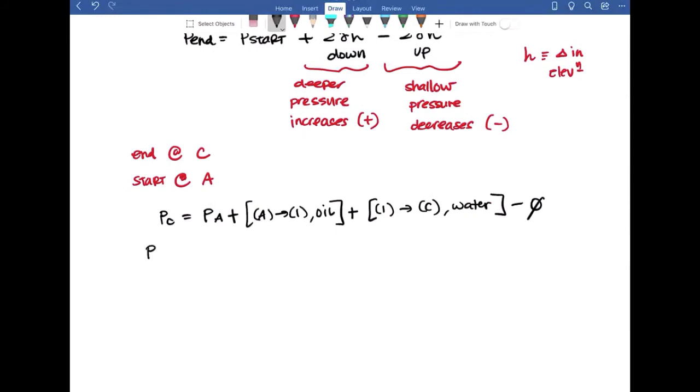So PC is equal to PA plus gamma oil, ZA minus Z1, plus gamma water, Z1 minus ZC. We have everything. We have PA, we have gamma oil, we have our Zs.